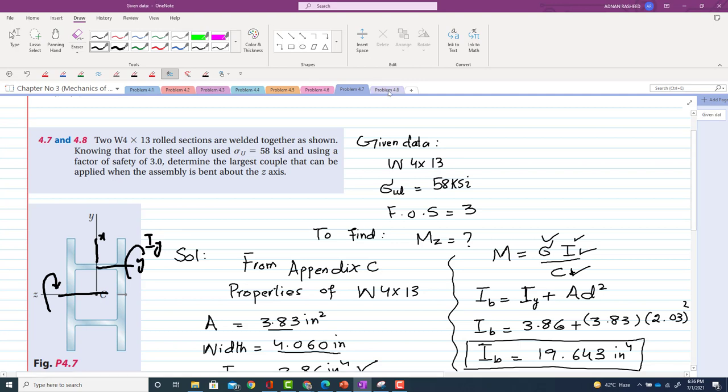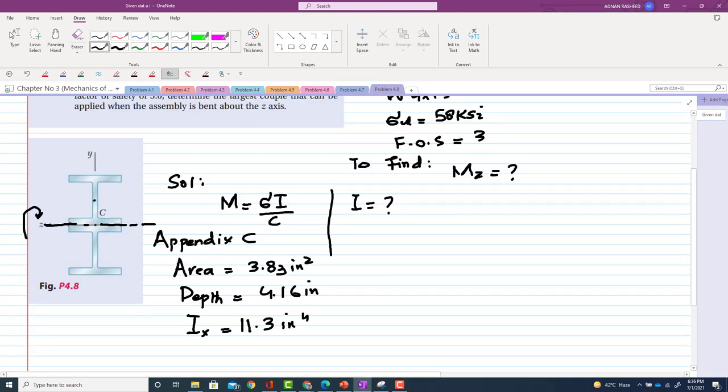That's why you have taken the I value here. In this problem, the x is like this from Appendix C, y is this, so you have to take the moment about x, so Ix. This is the reason why I use Ix here. I hope you've got the idea.